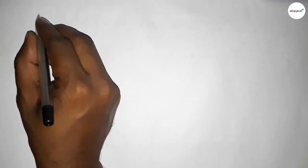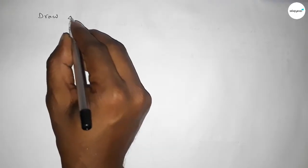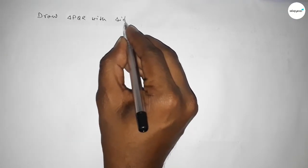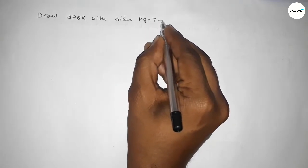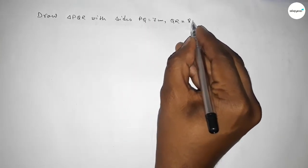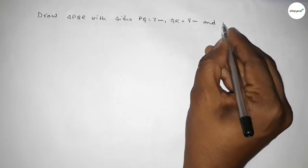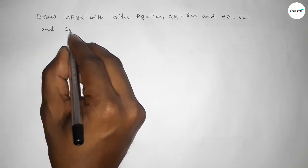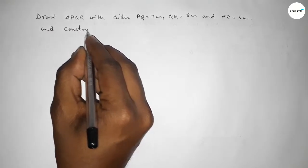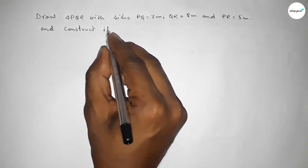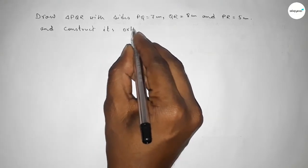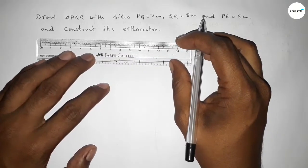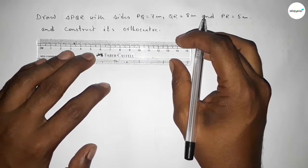Hi everyone, welcome to SISR Classes. Today in this video we have to draw a triangle PQR with sides PQ equal to 7 centimeter, QR equal to 8 centimeter, and PR equal to 5 centimeter, and also find its orthocenter. So let's start constructing the triangle.